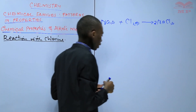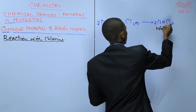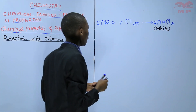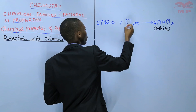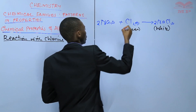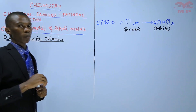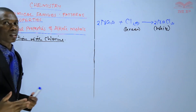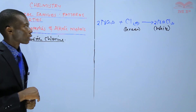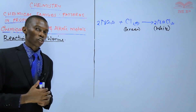We balance the equation accordingly. Sodium chloride is white in colour. Chlorine gas is green — a green gas — and it reacts with sodium metal, which has a shiny metallic lustre when freshly cut. When it reacts with chlorine gas, it leads to the formation of a white solid, which is sodium chloride.